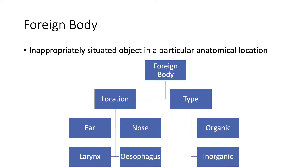A foreign body is an object or substance that is inappropriately situated in a particular anatomical location. It can be categorized by location or type. The location of the foreign body may be life-threatening, such as in the larynx, or benign, such as in the ear. It can also be subdivided into organic and inorganic types. It is important to note the nature of the foreign body that may pose a direct threat to body tissue, such as a battery.